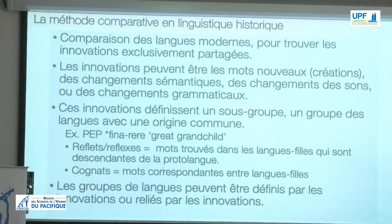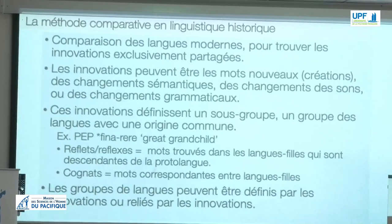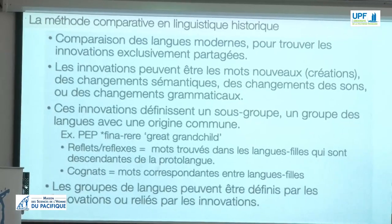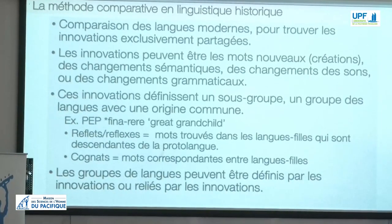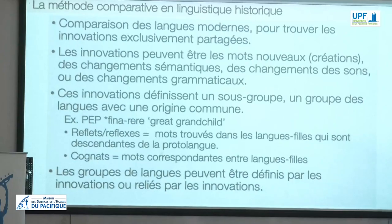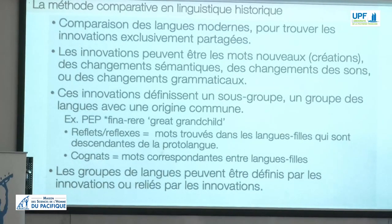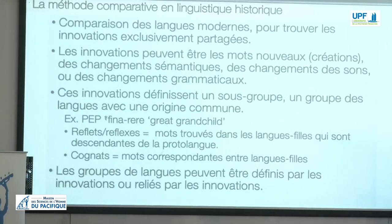For example, among languages of eastern Polynesia, we find several similar words relating to great grandchild — something like kinarere — and these are only found in eastern Polynesian languages. So based on what we know of the corresponding sounds in these languages, we can reconstruct *kinarere, meaning great grandchild, to proto-eastern Polynesian. That little star indicates a proto-language reconstruction. Forms found in daughter languages that descend from proto-languages are called reflexes, and corresponding forms between daughter languages are called cognates.